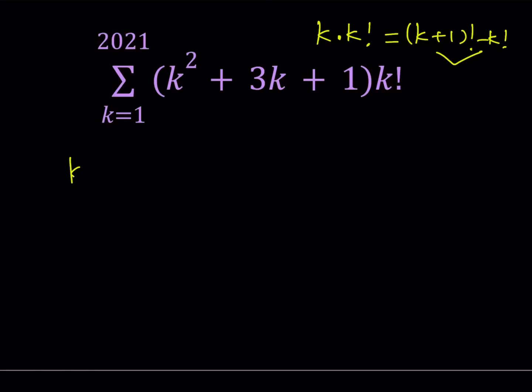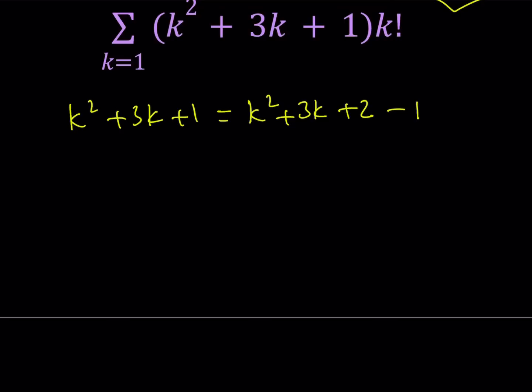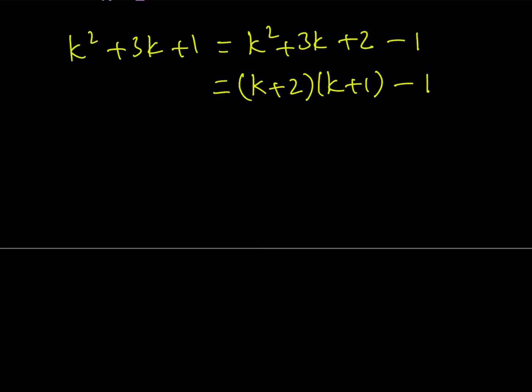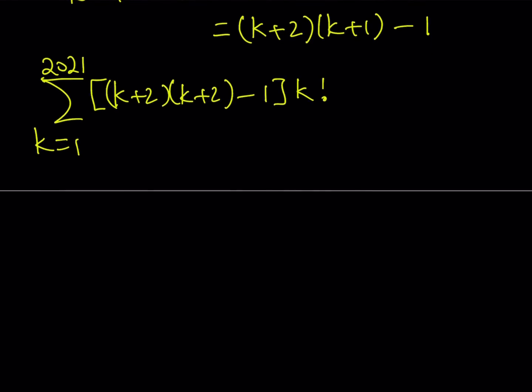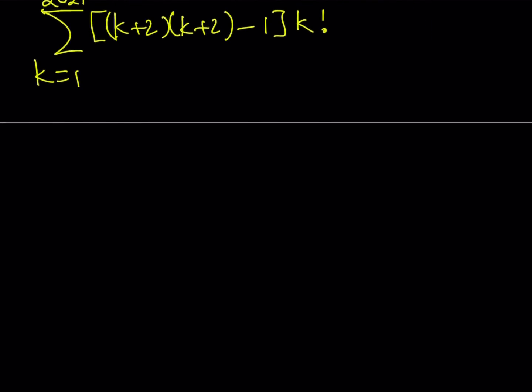If you write k squared plus 3k plus 1 as k squared plus 3k plus 2 minus 1, the reason we use k squared plus 3k plus 2 is because it's factorable into k plus 2 times k plus 1. That's the first part. We're going to substitute that here and multiply it by k factorial, and then we are just going to sum it. So if I replace my quantity, it's going to be 1 through 2021, I'm going to be getting k plus 1 times k plus 2 minus 1.